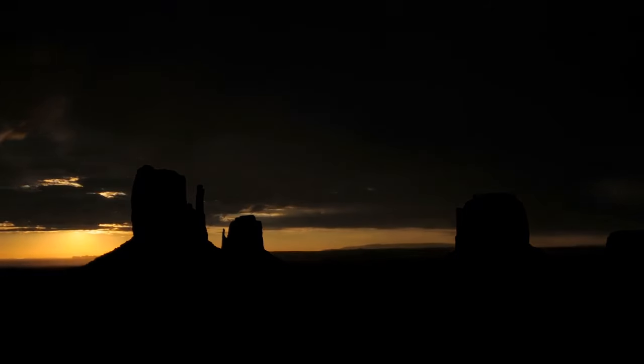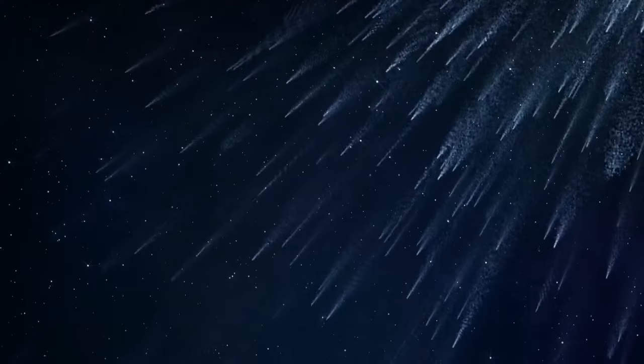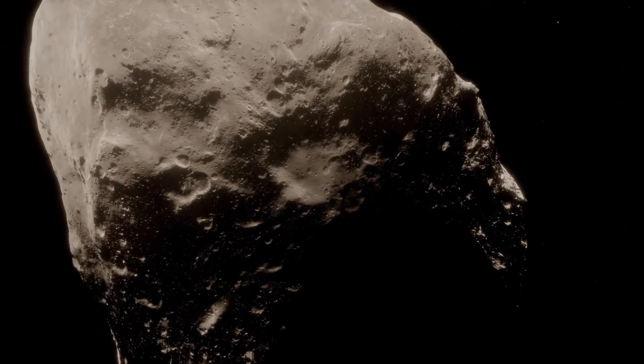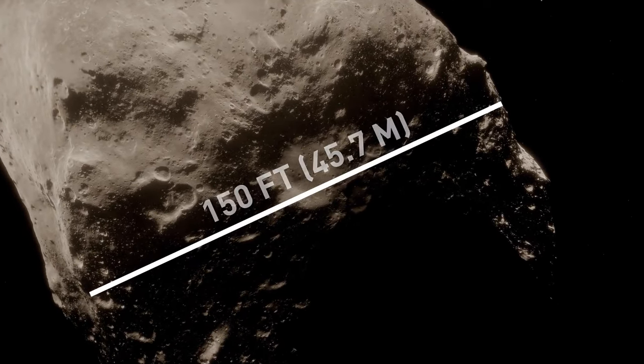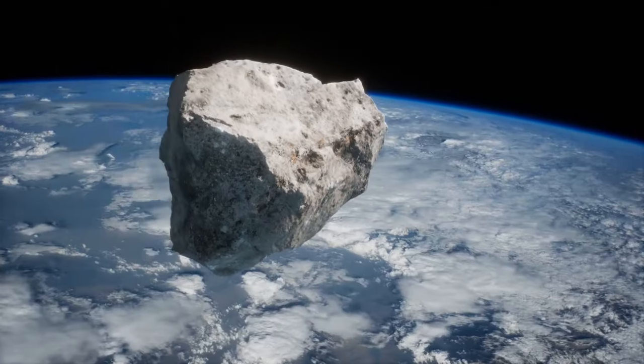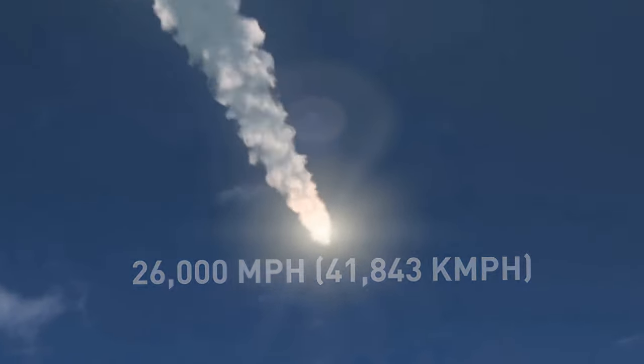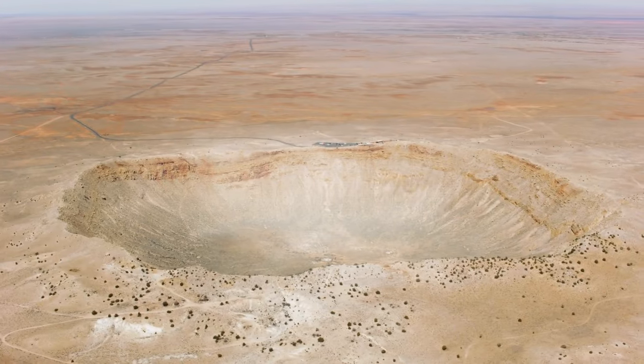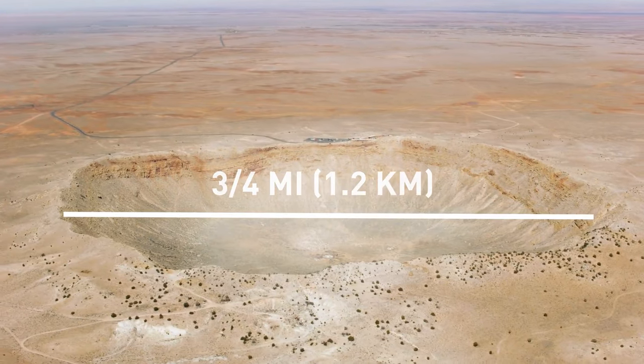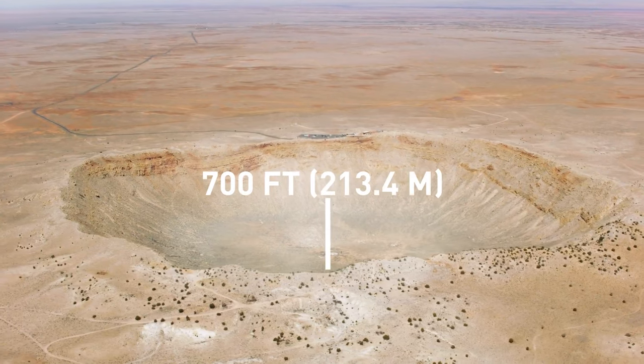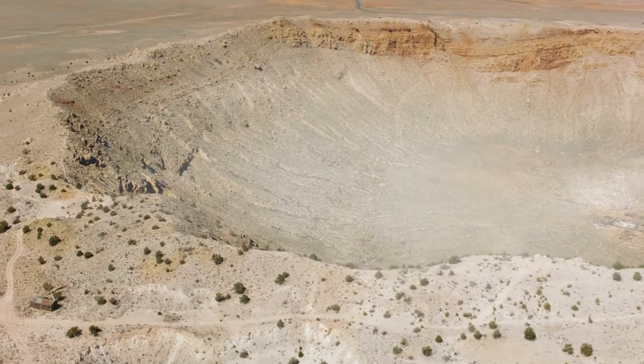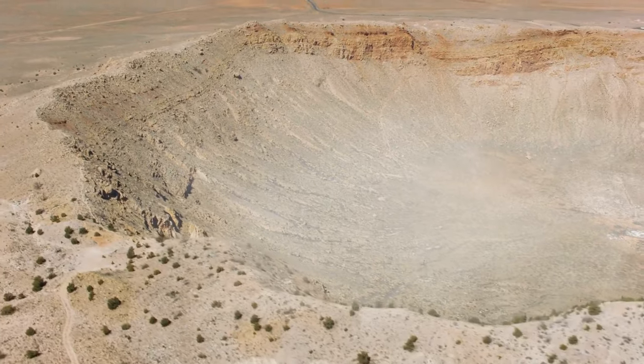Next, get ready to witness the coolest meteor shower in Arizona. Picture this. 50,000 years ago, a ginormous meteor, about 150 feet wide, decided to make a grand entrance into our atmosphere. It zoomed in at a staggering speed of 26,000 miles per hour. When it finally crashed into Arizona, it created an incredible crater that's three-quarters of a mile wide and a whopping 700 feet deep. And now, here is the meteor crater, the ultimate meteor impact site on Earth. Fast forward to today, and you have the awesome Behringer Space Museum sitting right on the edge of the crater. You can soak in the incredible views from various viewpoints. You can even take a guided tour along the rim.